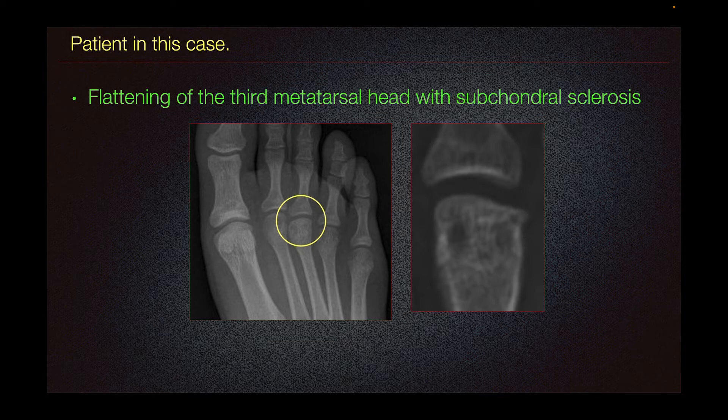Rheumatologic disorder, on the other hand, typically presents in a polyarticular pattern and may be accompanied by marginal erosions. However, serum testing could be performed to correlate to radiographic findings.